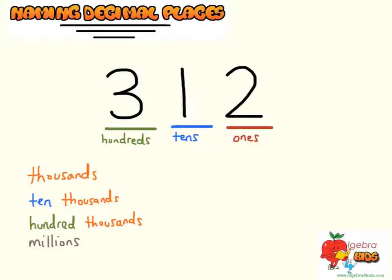Hey there! Let's talk about naming decimal places. Each decimal place in a number has a value, so each digit represents a different kind of decimal value.